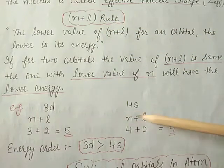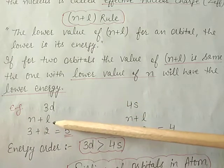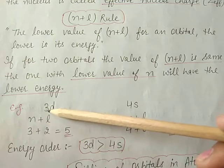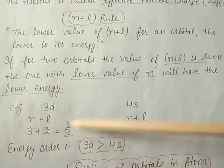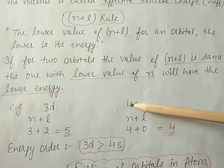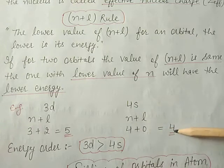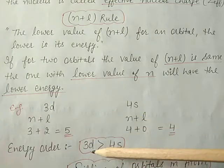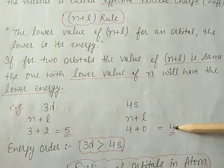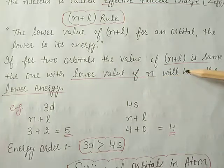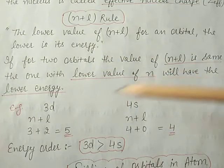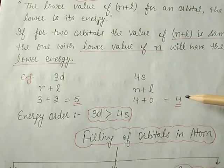Let's take an example. For the 3d orbital: n=3, l=2, so n+l = 5. For the 4s orbital: n=4, l=0, so n+l = 4. Since 4s has a lower n+l value, its energy is lower. And when n+l values are equal, lower n means lower energy. So 4s has lower energy compared to 3d, and is filled first.